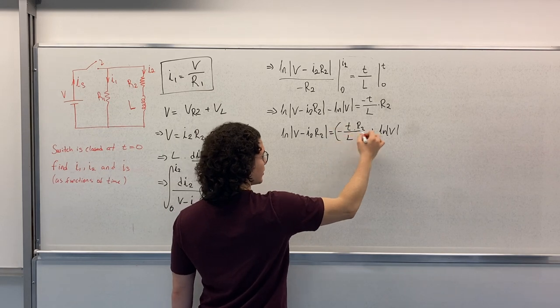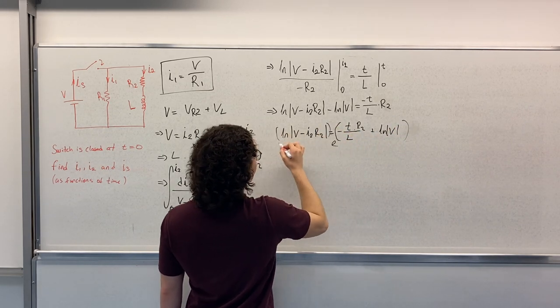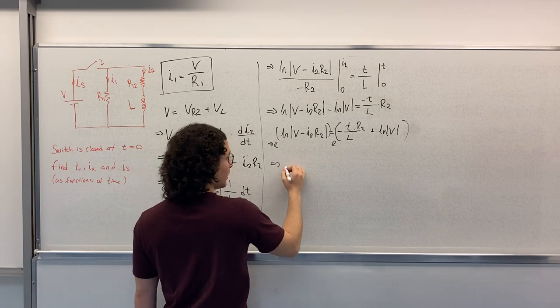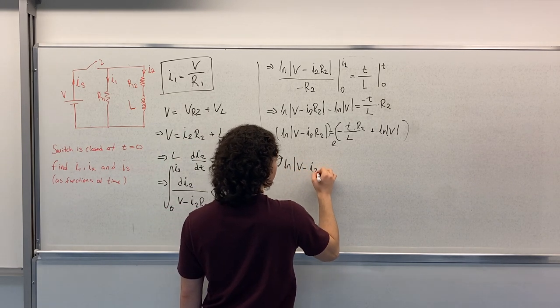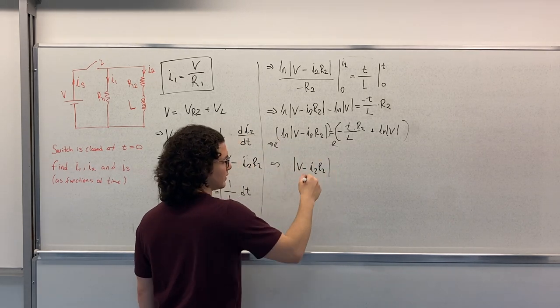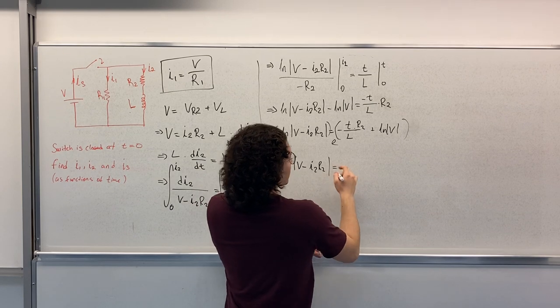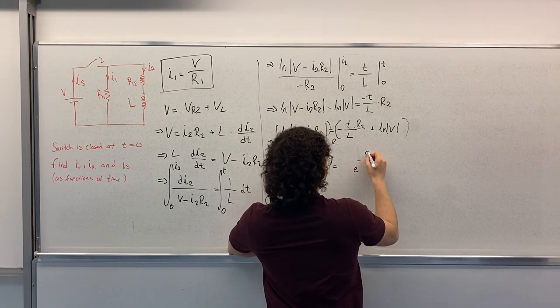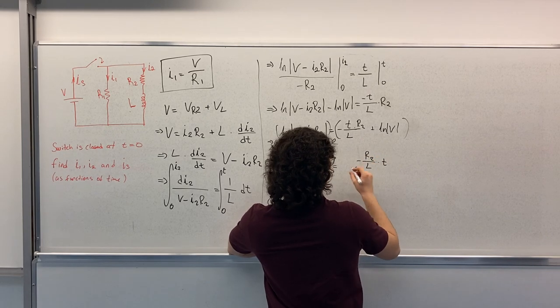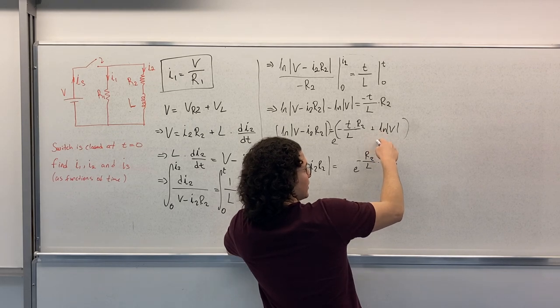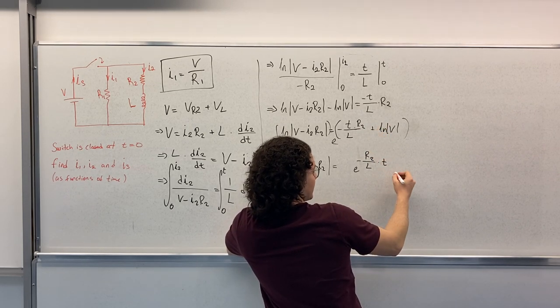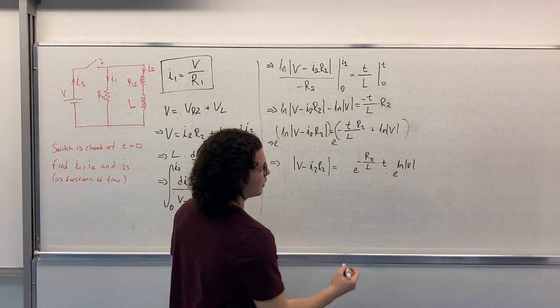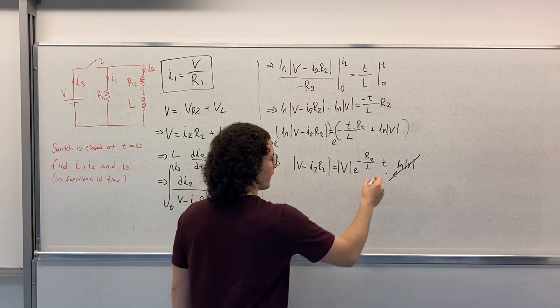We will take the exponential of these. From this we have Lm V minus I2 R2. This is equal to E to the power minus R2 over L times T. The exponential is also here, times E to the power Lm V. We can put this down here.